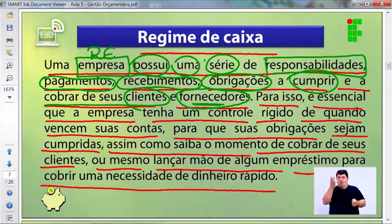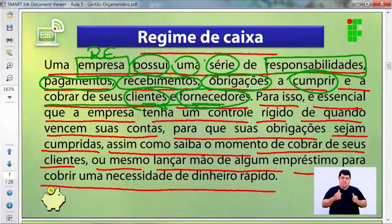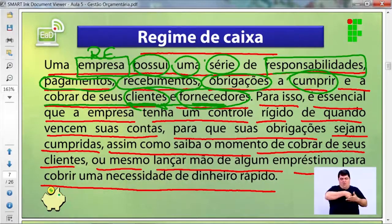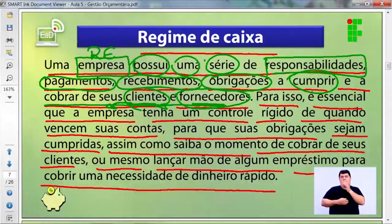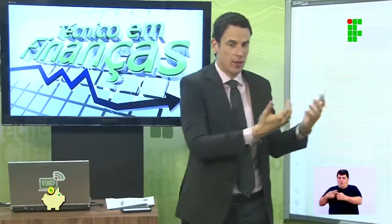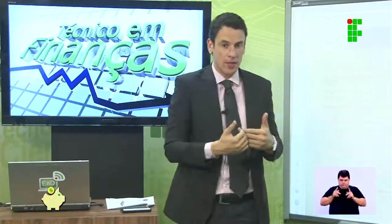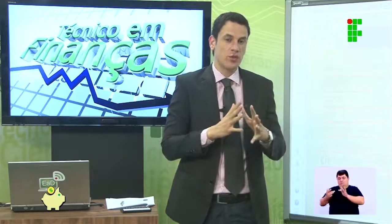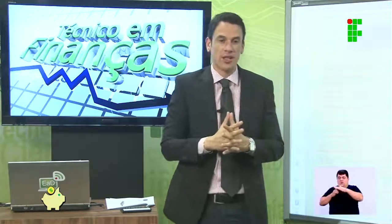Os fornecedores fornecem insumos para seus clientes. Esse cliente ainda não é a pessoa física que faz aquisição do produto e serviço, mas a pessoa jurídica, que vai atender o consumidor final. Por exemplo, tenho uma empresa que compra embalagens, meu fornecedor é a KY. Eu sou cliente dela, porque recebo a matéria-prima. Esse tipo de relação entre pessoa jurídica e pessoa jurídica chama-se B2B.